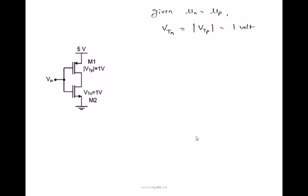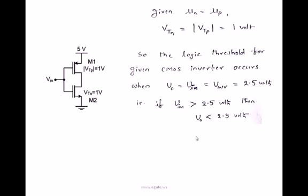Whenever M1 and M2 are perfectly matched, logic threshold is going to be exactly in the half of 0 to 5V. So logic threshold appears when V0 is equal to V input is equal to V inversion. That is V threshold, logic threshold is equal to 2.5V.